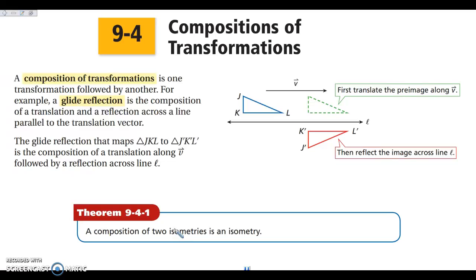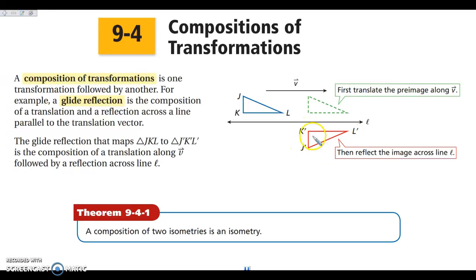Let's take a look at our example over here to the right. If I look at this glide reflection, I am translating it along vector V, so it slides the same distance as V, and then I am reflecting it over line L. So this is kind of the midway piece, and then this is where we end up. We're going to end up from JKL doing the glide, then reflection, to get J'K'L'.